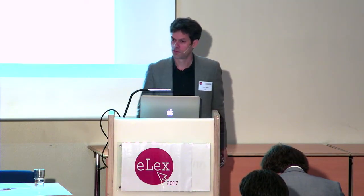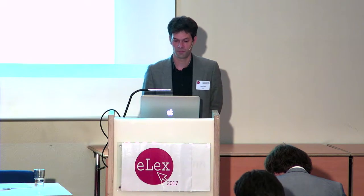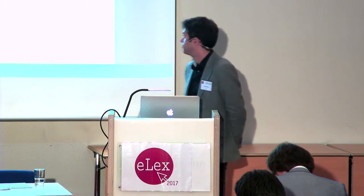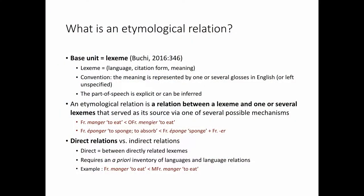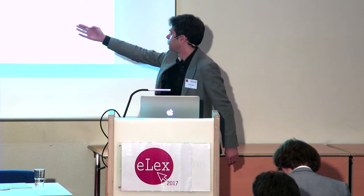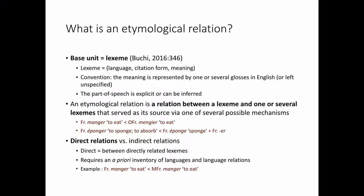An etymological relation can relate a target lexeme to one source lexeme, or to several source lexemes, depending on the situation. For example, French 'manger', which means 'to eat', comes from Old French 'manger', which means 'to eat' — that's a one-to-one relation. Whereas 'éponger' has been created by morphological derivation by combining the French noun 'éponge', meaning 'sponge', and the suffix '-er', which is how verbs are made from nouns. We can define direct relations as opposed to indirect relations. Direct relations are between two lexemes that are directly related — for example, French 'manger' comes from Old French 'manger'.